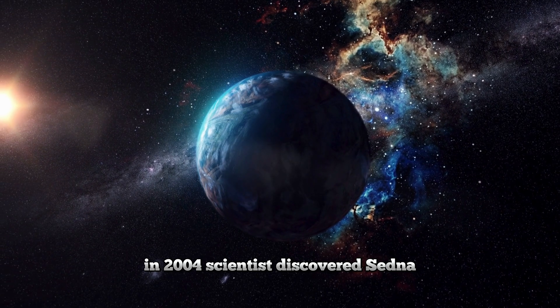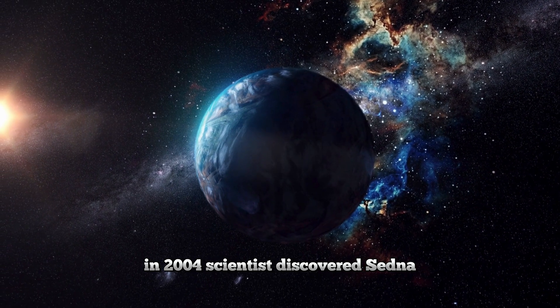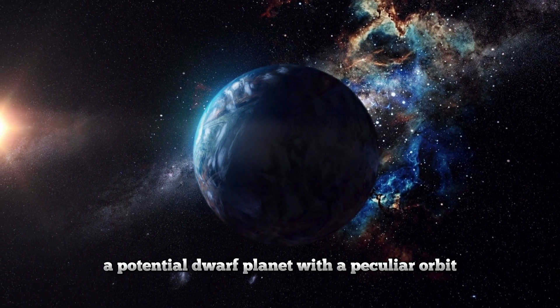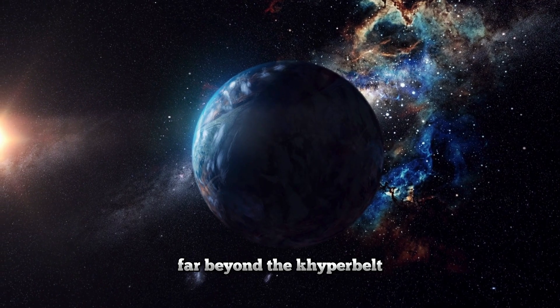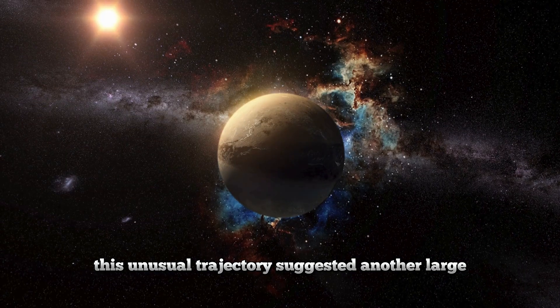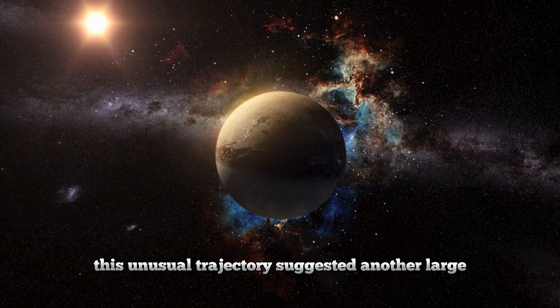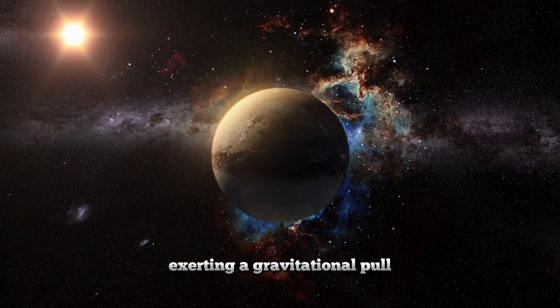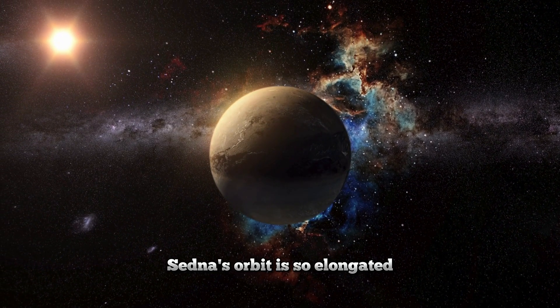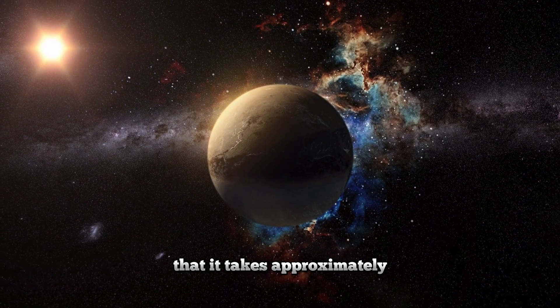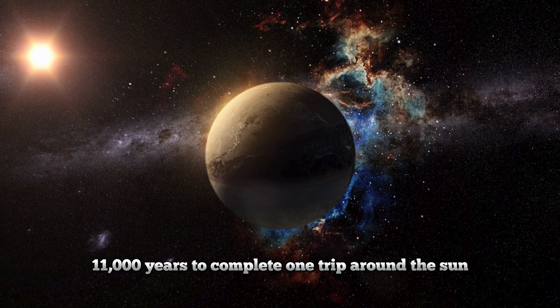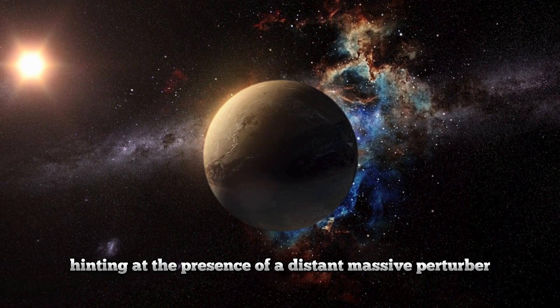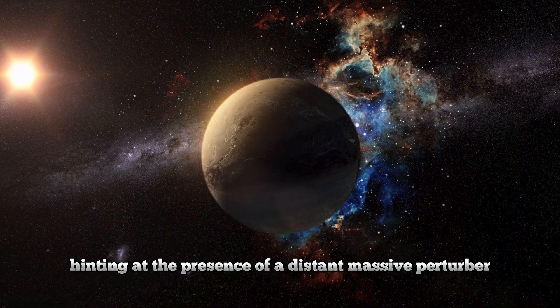In 2004, scientists discovered Sedna, a potential dwarf planet with a peculiar orbit far beyond the Kuiper belt. This unusual trajectory suggested another large object in the outer solar system, exerting a gravitational pull. Sedna's orbit is so elongated that it takes approximately 11,000 years to complete one trip around the Sun, hinting at the presence of a distant, massive perturber.